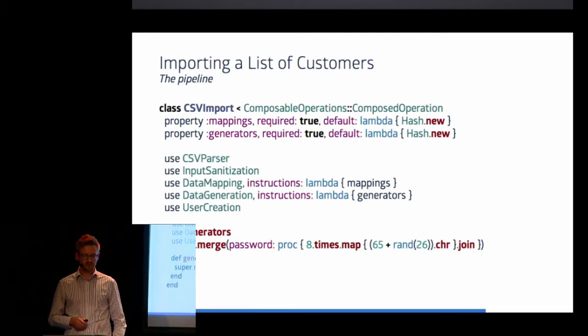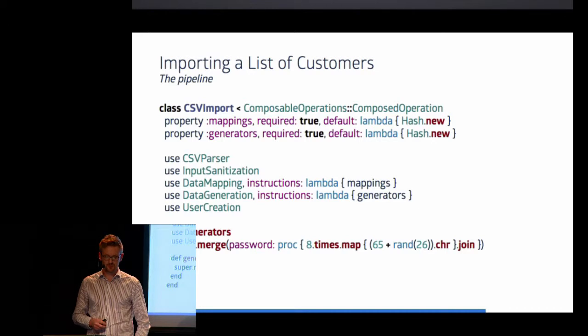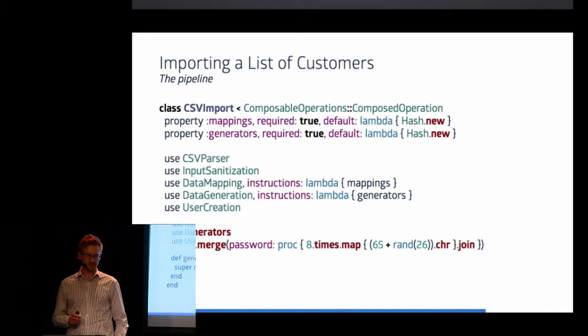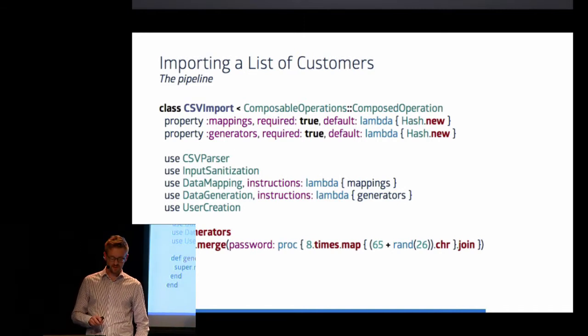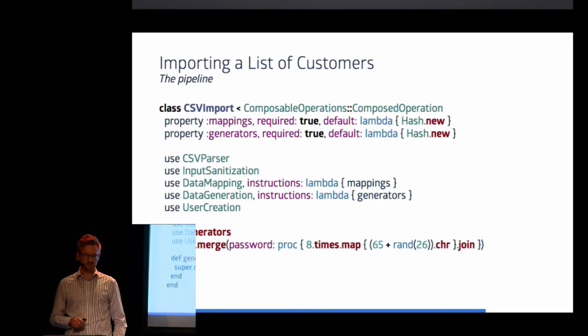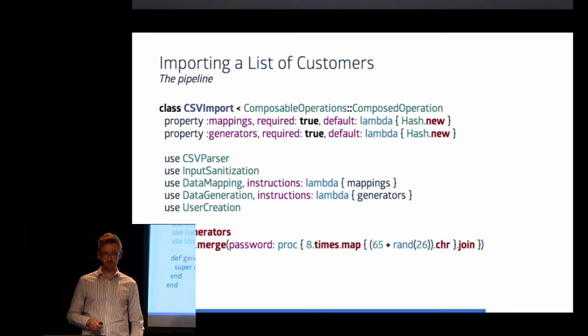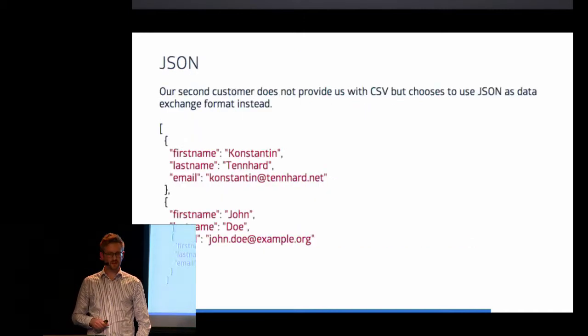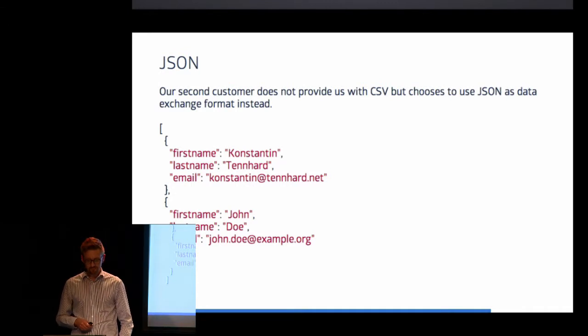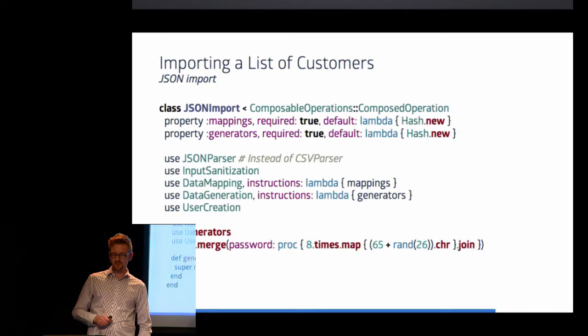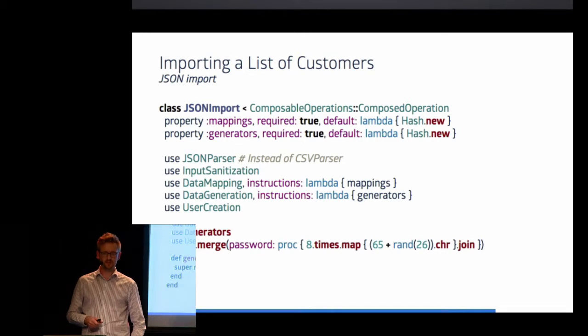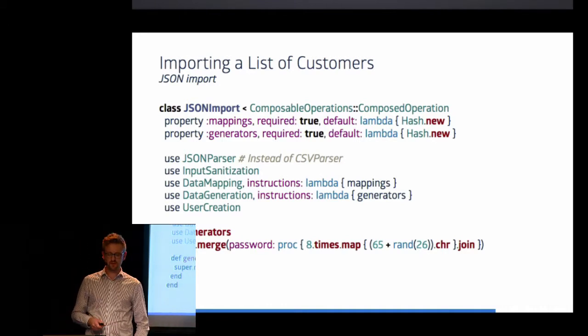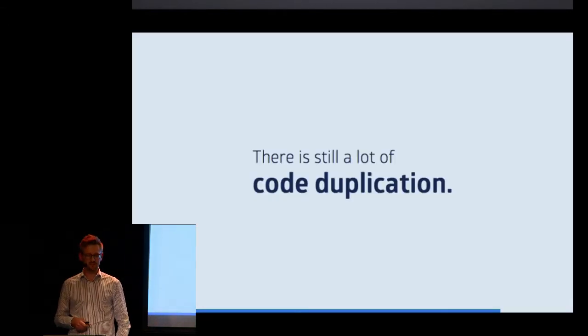And an implementation could look something like this, where we have an operation that accepts two configuration parameters. These configuration parameters define mappings and generators. Mappings is simply a hash that maps a column name to a field name. And generators contains a bunch of lambda expressions. I sadly don't have the time to go into the five components that I used here. Because I want to show you a more advanced example that builds on top of this one. Let's say we get a second customer, and now this customer provides us with JSON data. Well, good thing is that we pulled out the code that does the data mapping and the data generation and the user creation into their own operations, so we can utilize them. But compared to the CSV import operation, there's only one line that changed. So for me, this still feels like a lot of code duplication.